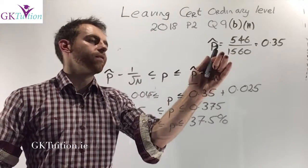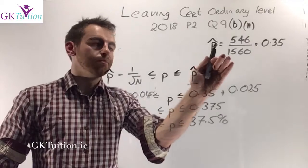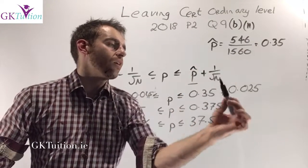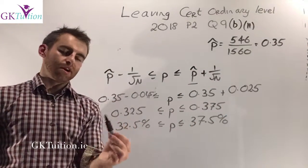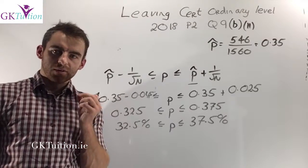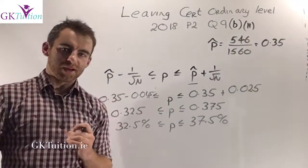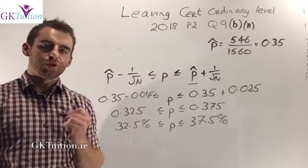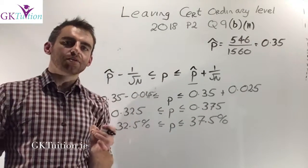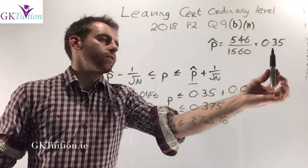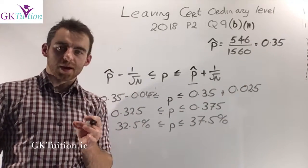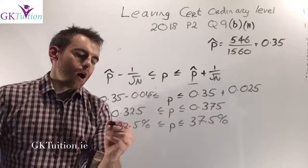In order to accommodate for the fact that these people might be skewed I need to add on the margin of error and subtract the margin of error. I figured out in the first part the margin of error is 2.5%. So I add on 2.5% and subtract 2.5%.